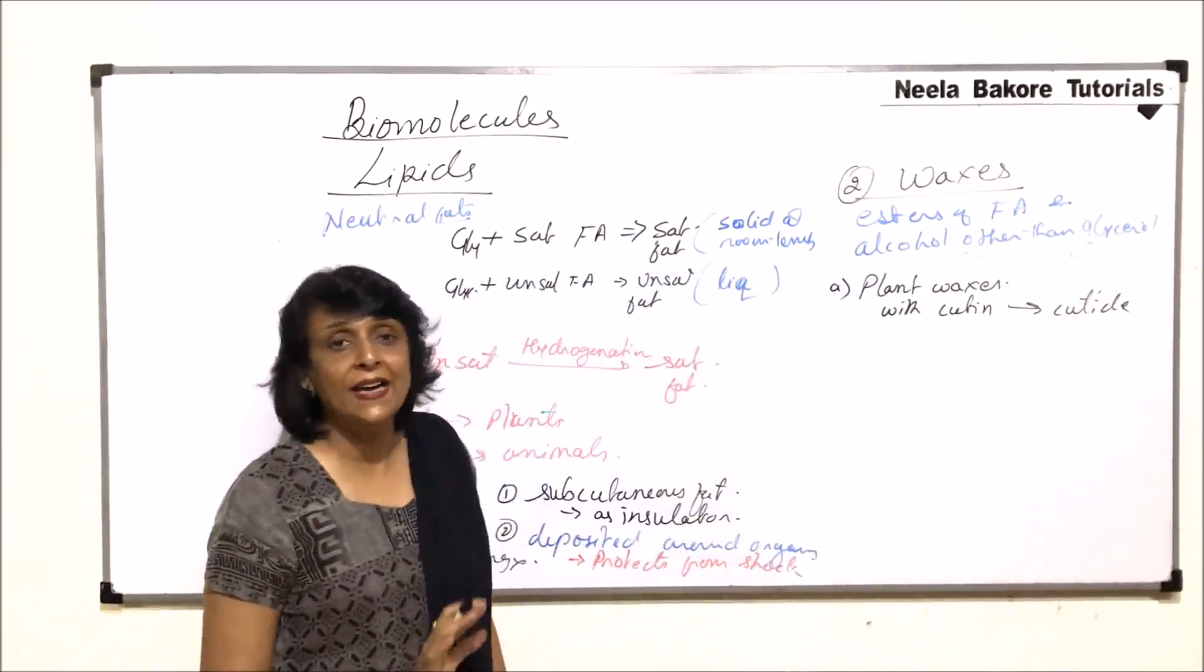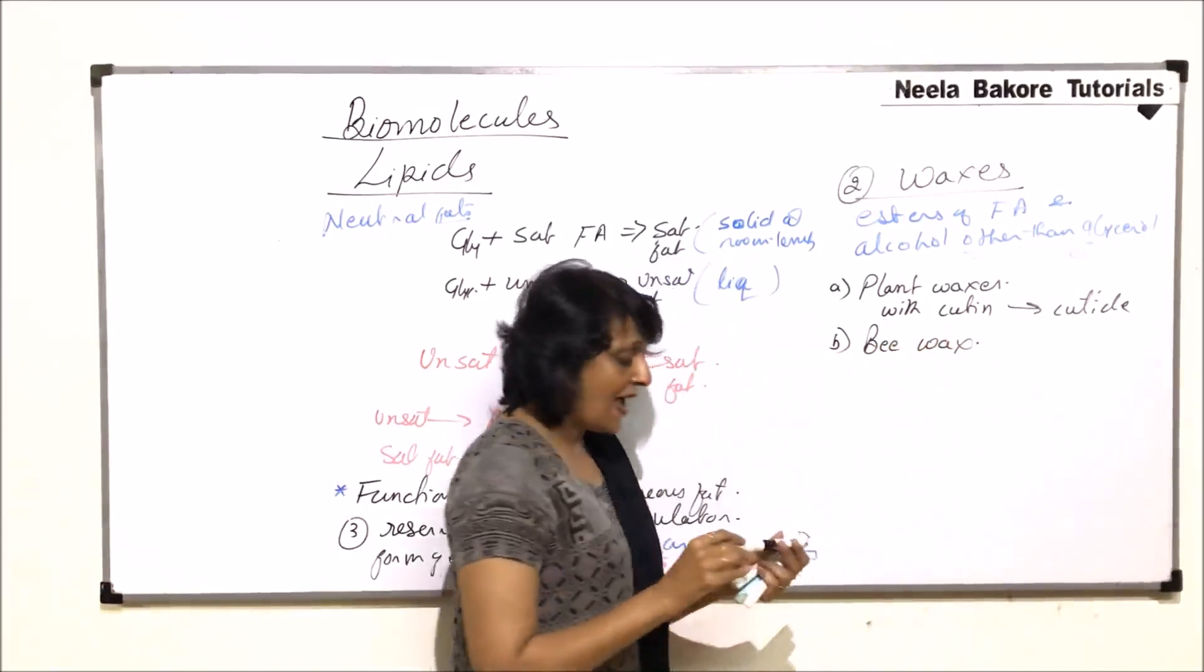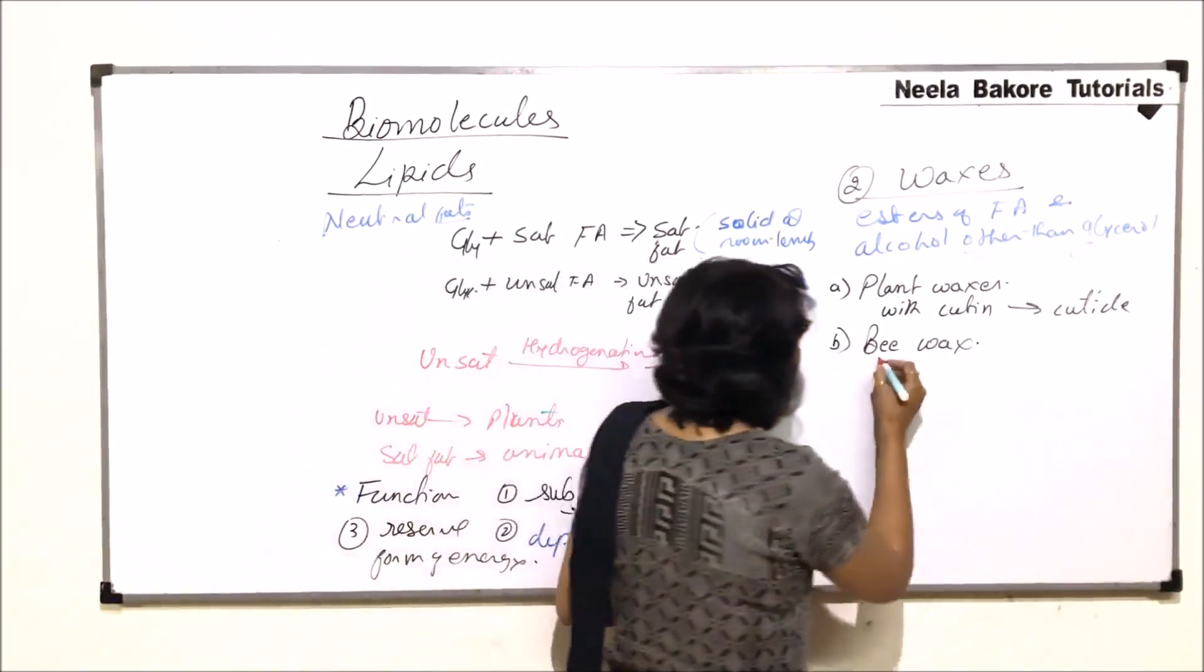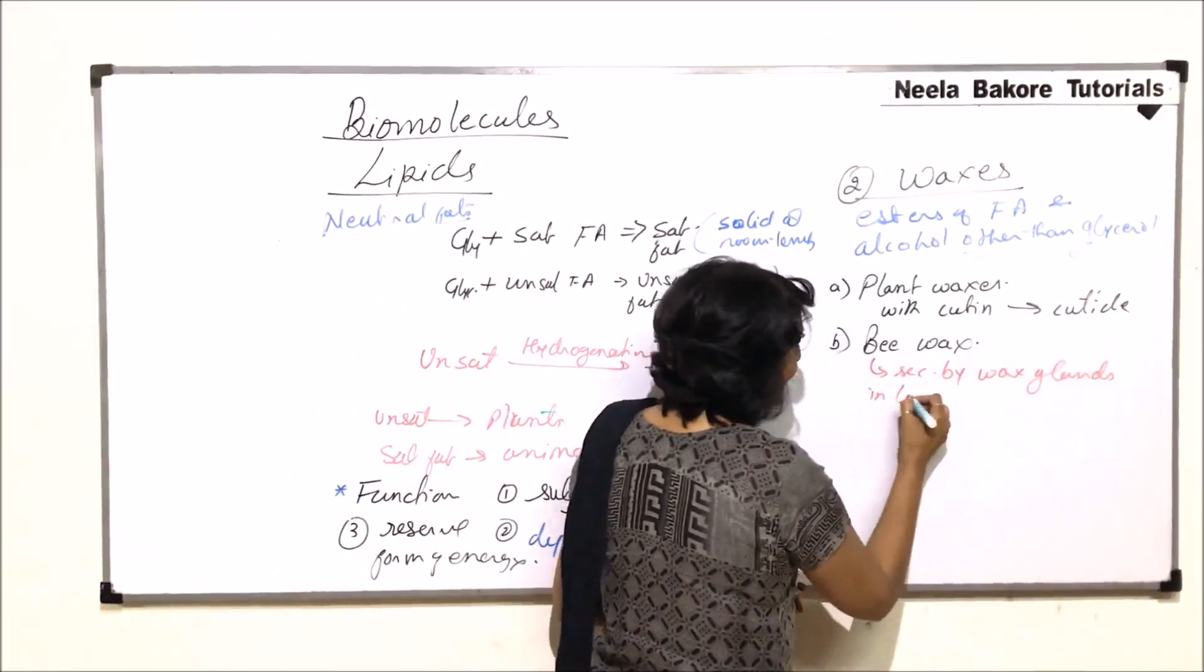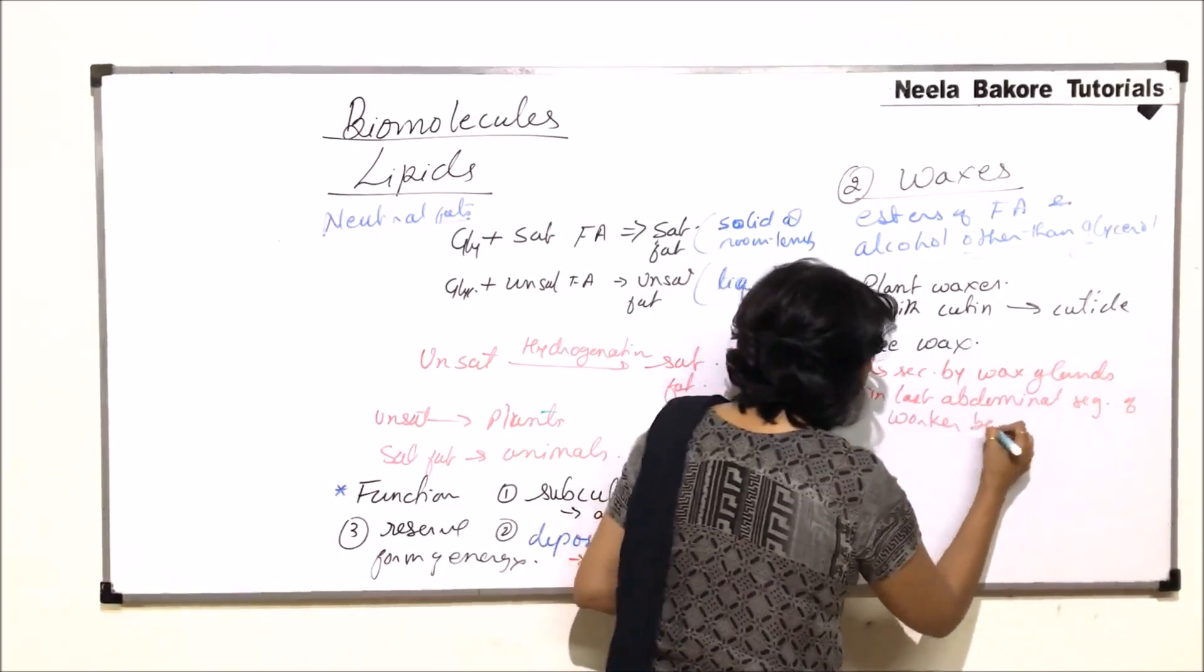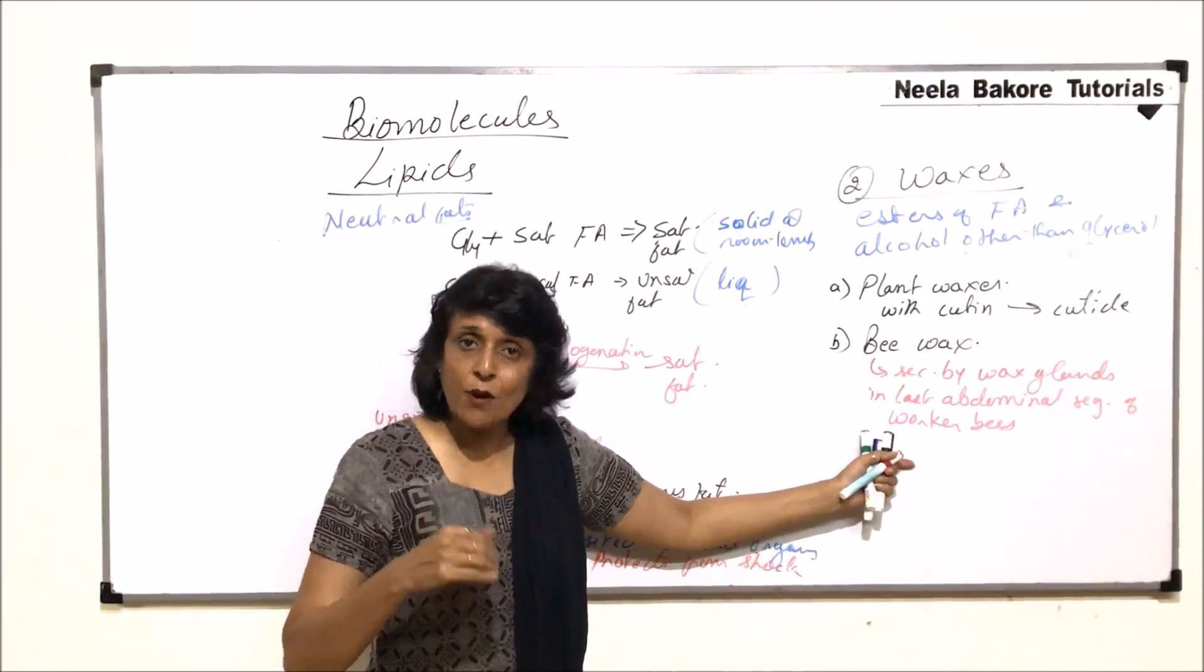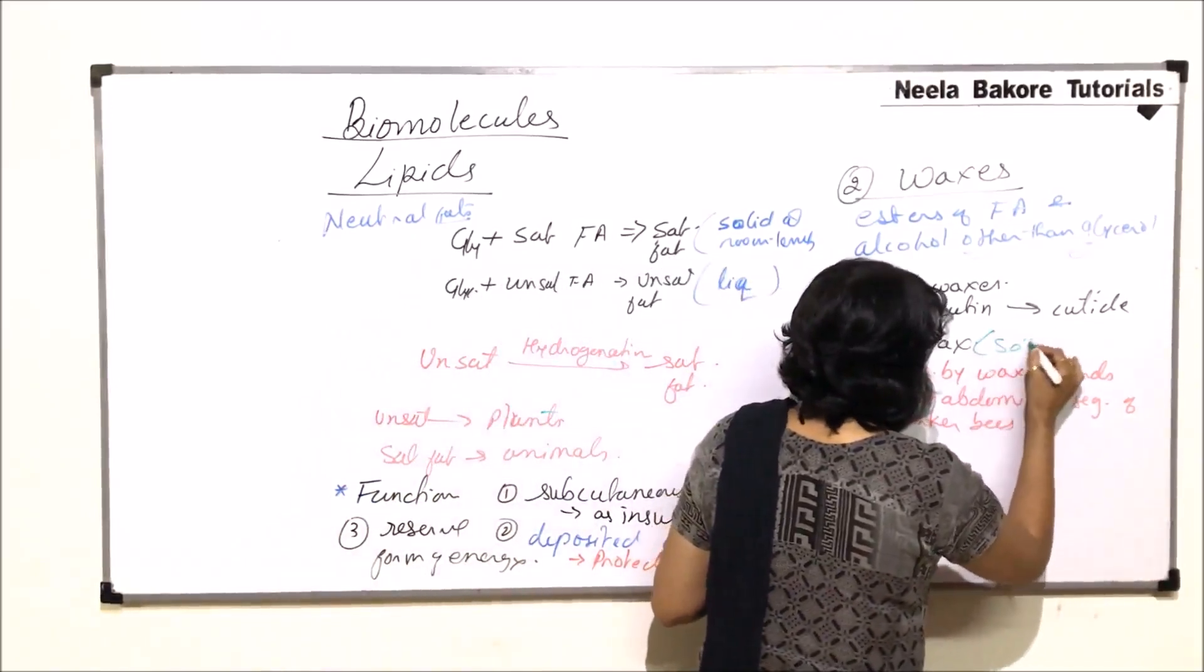Another type of wax which we are talking of is bee wax. The wax which is produced by honey bees to make their hives, the cells, hexagonal compartments which are present in the hive, they are made of this bee wax. So this bee wax is secreted by wax glands which are in the last abdominal segments of worker bees. Because these are the workers only which are going to construct the hive, so only worker bees have these glands in the last abdominal segment from where they secrete this wax. It is yellow and soft. Bee wax is soft and yellow.